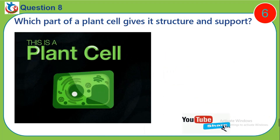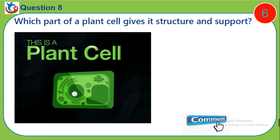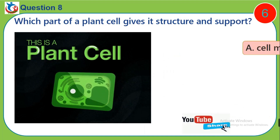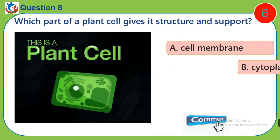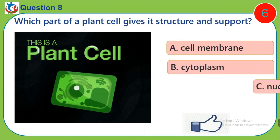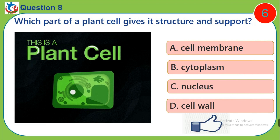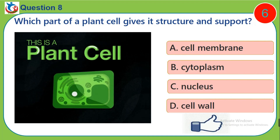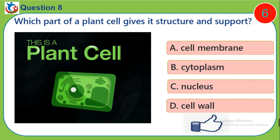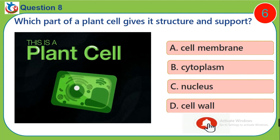Question 8. Which part of a plant cell gives it structure and support? A. Cell membrane. B. Cytoplasm. C. Nucleus. D. Cell wall.